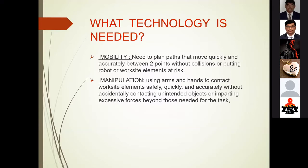What technology is needed? Mobile ability and manipulation. Mobile ability means planning a path that moves quickly and efficiently between two points without collision, without putting the robot or worksite elements at risk. Manipulation means using arms and hands to interact with worksite elements safely and quickly, without any accidental contact — essentially using objects or applying a sensor force as needed for any task.